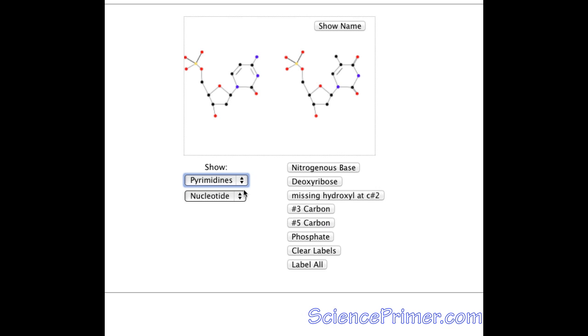Below the nucleotide selector, a second selector allows the view to be switched from showing nucleotides to nucleosides. Nucleotides have a phosphate group. Nucleosides do not.